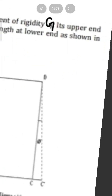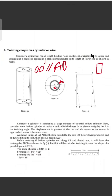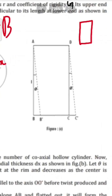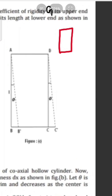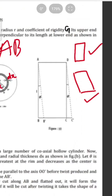In the untwisted state it forms a rectangle ABCD. But if it is cut after twisting, it takes the shape of a parallelogram ABCD. So the rectangle becomes a parallelogram after twisting.